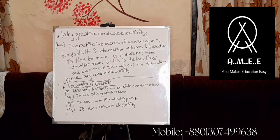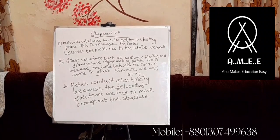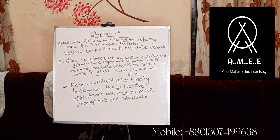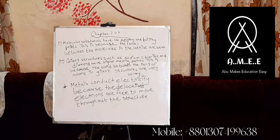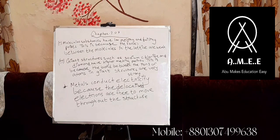Now we are going to start the new chapter. The first key point is that molecular substances have low melting and boiling points, because the forces between the molecules in the lattice are weak. The second point is that giant structures such as sodium chloride and diamond have higher melting points, because the bonds between the ions or atoms in giant structures are very strong.